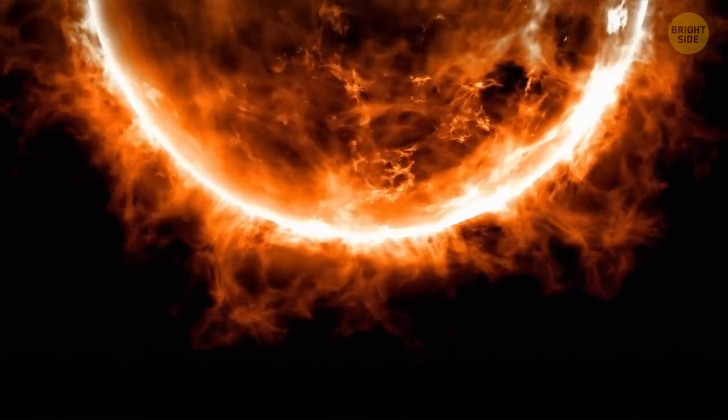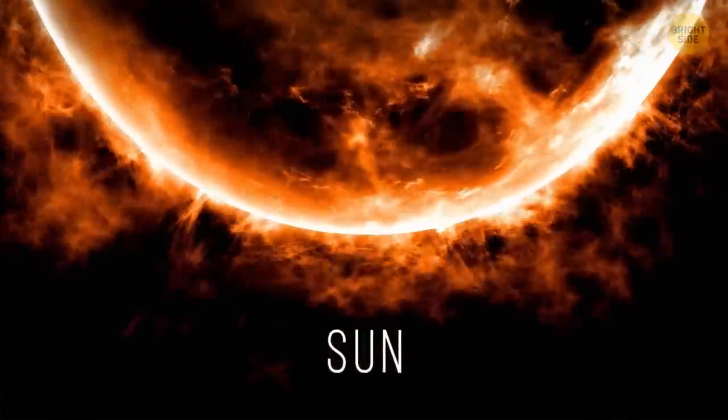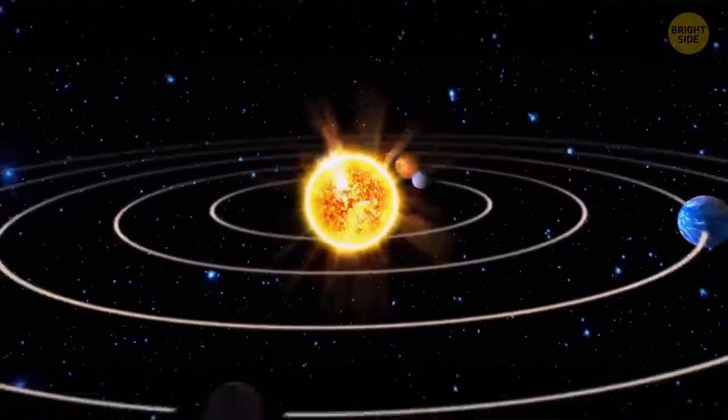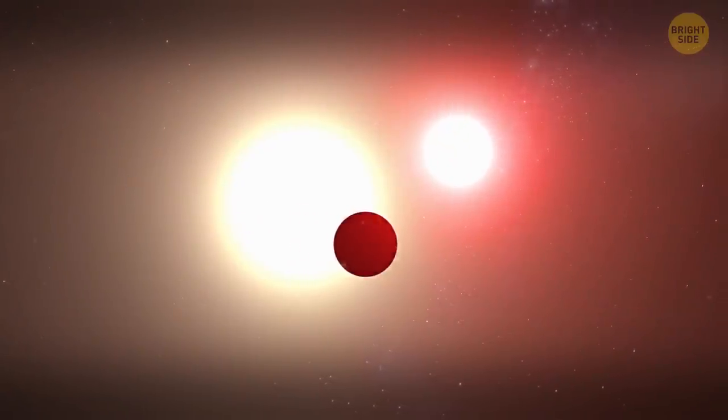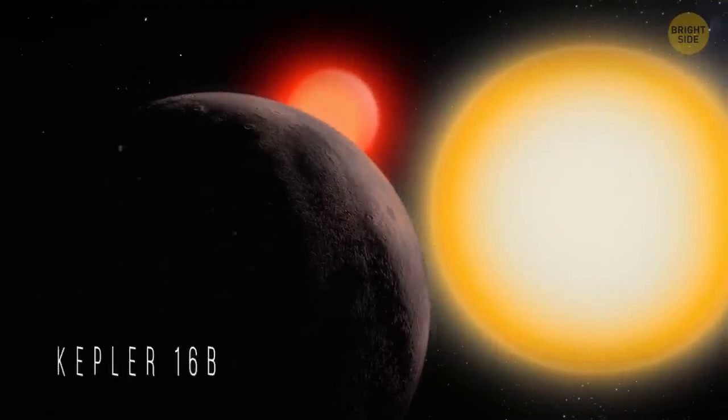There's only one star in our solar system, the Sun. And all the planets orbit the star. But there are also systems where a planet orbits two suns. For example, Kepler-16b.